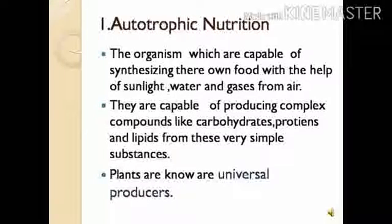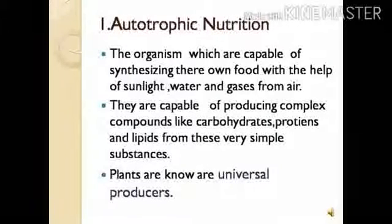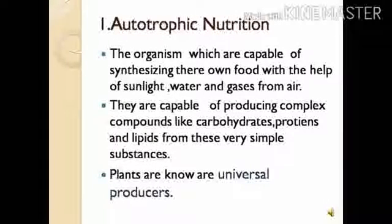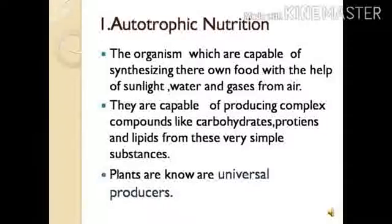Autotrophic nutrition: 'auto' means deriving food by itself, 'trophic' relates to living. Plants have autotrophic nutrition because they are capable of preparing food with the help of sunlight, water, and gases from the air. They are capable of producing complex compounds — carbohydrates, proteins, and lipids — from very simple substances like sunlight, water, and other gases. These plants are also known as universal producers.